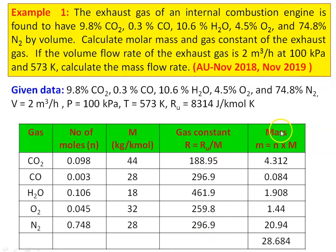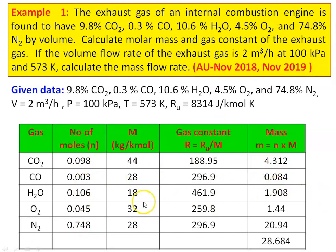We calculate the mass of each gas constituent: mass m = number of moles × molecular weight (second column × molecular weight column). For CO2: 4.312 kg, CO: 0.084 kg, H2O: 1.908 kg, O2: 1.44 kg, and N2: 20.94 kg.